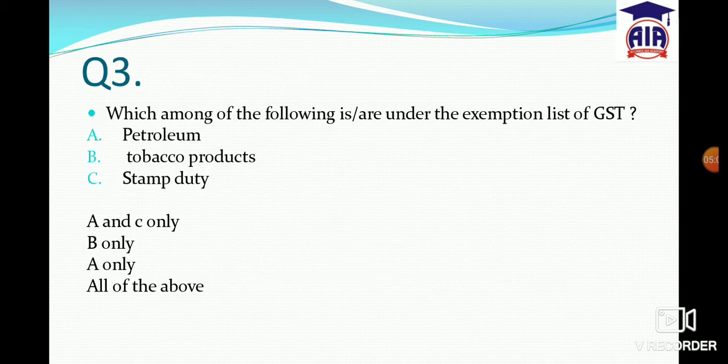Next question: Which among the following are under the exemption list of GST? Options include petroleum, tobacco products, and stamp duty. The answer options are A and C only, B only, A only, or all of the above.